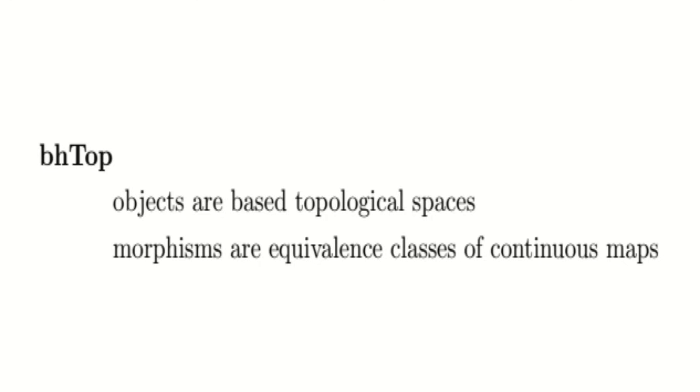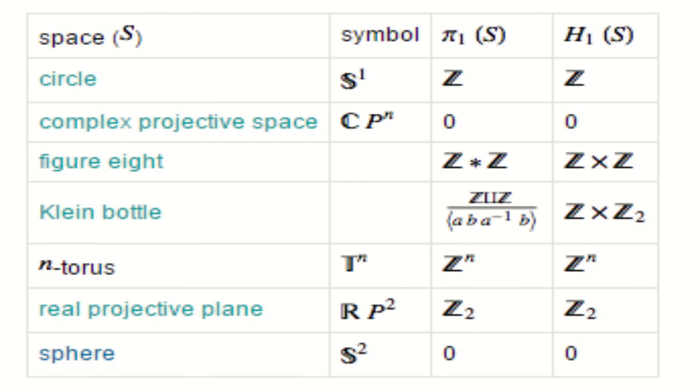Okay, so our relevant functor for our base homotopy category is the fundamental group functor that takes each base homotopy space to its group of loops up to homotopy, and takes each class of continuous functions to its induced homomorphism of groups.